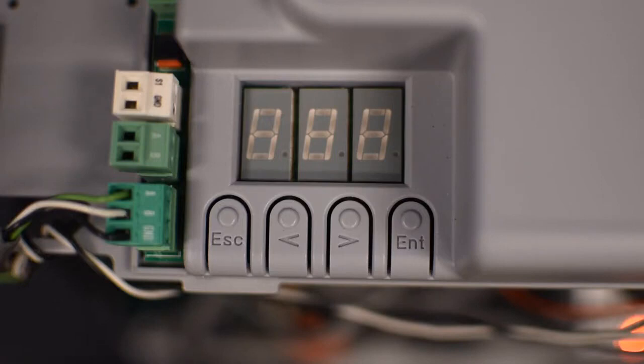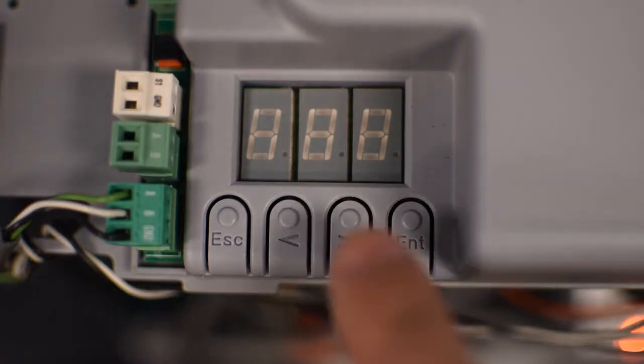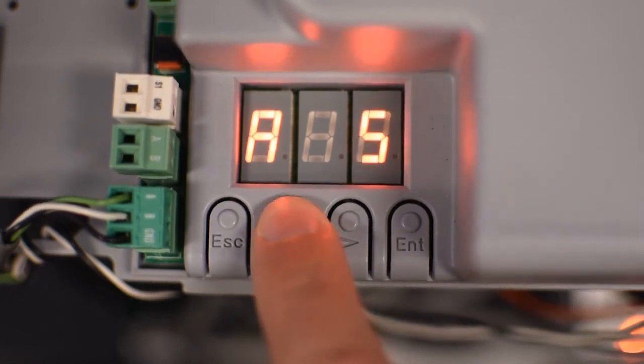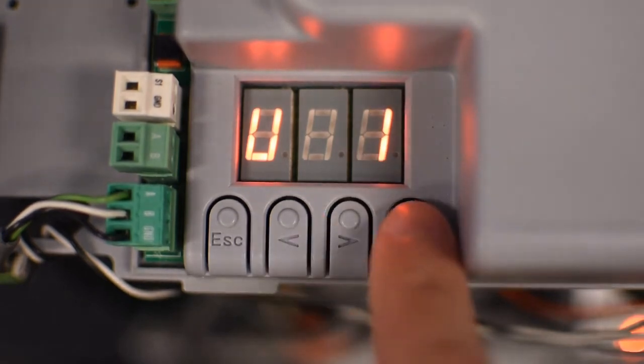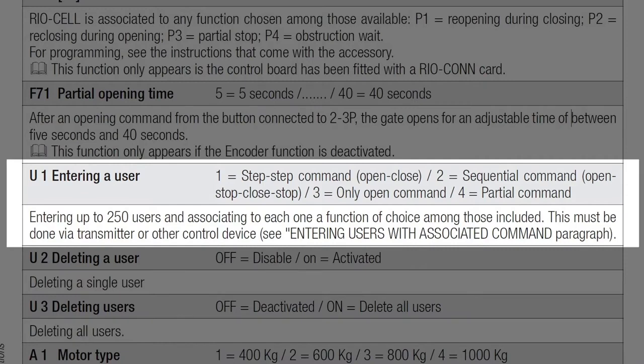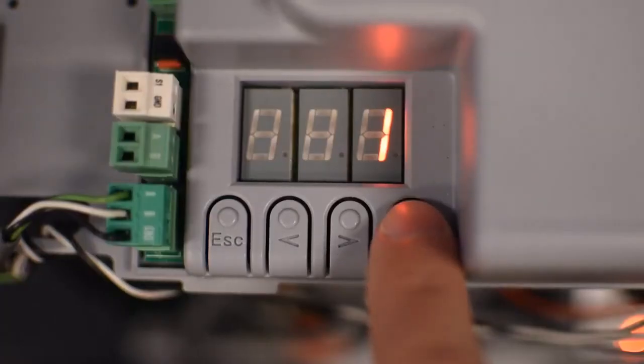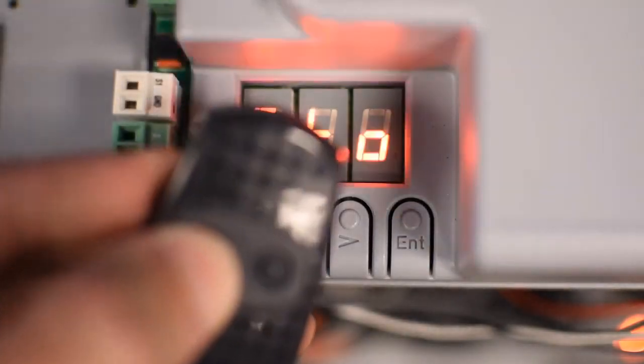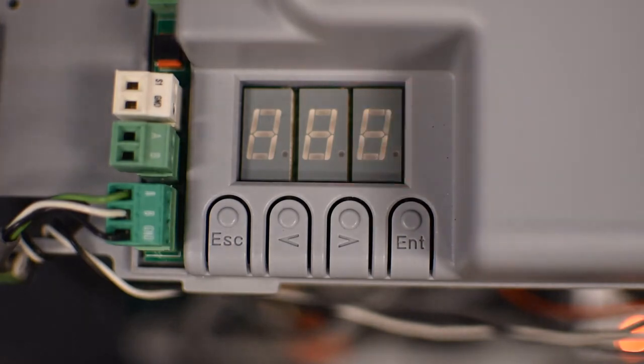To program a remote control, go to U1. Press Enter and it will show the number 1, indicating the command you want to assign to the button in the remote control. Select which type of command you want and press Enter. Then a number is going to blink, indicating that it's ready to receive the signal from the remote control. So press the button you wish to program.